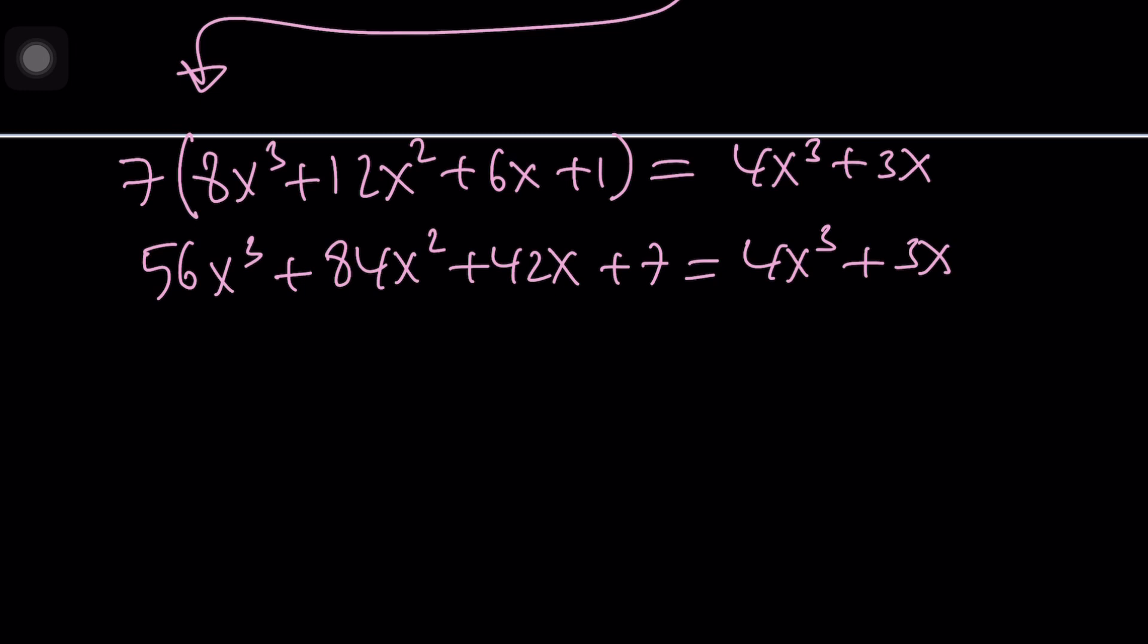Let's go ahead and subtract 4 from 56. That gives us 52x³. There's no other x² term and if you subtract 42 minus 3, that gives you 39x and 7 is the only constant, so this equals 0. Now when you have a cubic equation, what can you do? There's a couple things you can try.